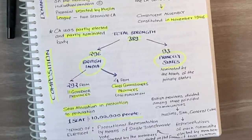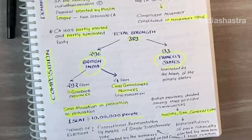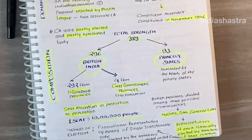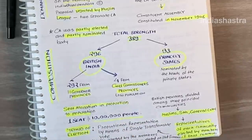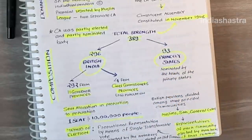The British provinces were divided among three principal communities: Muslims, Sikhs, and General — the rest of the population beside Muslims and Sikhs being general. Representatives of each community were elected by the members of that community only. This means in a Muslim constituency, the representative would be a Muslim, and only Muslim members from that constituency could vote. The method of election was proportional representation by means of single transferable vote. Elected members would sit in the constituent assembly, take part in discussions and deliberations, and ultimately form the constitution of India.